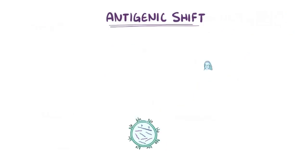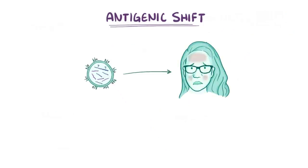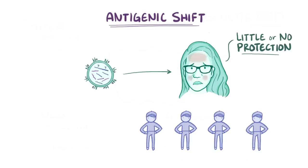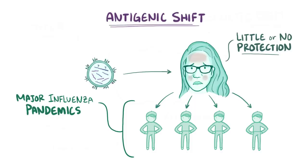When a virus is produced that can infect human cells and has entirely new proteins, people have little or no protection against it, and it can rapidly spread through the population. This antigenic shift process is responsible for three major influenza pandemics in the 20th century, including the Spanish flu in 1918, which killed 3% of the world's entire population at the time.